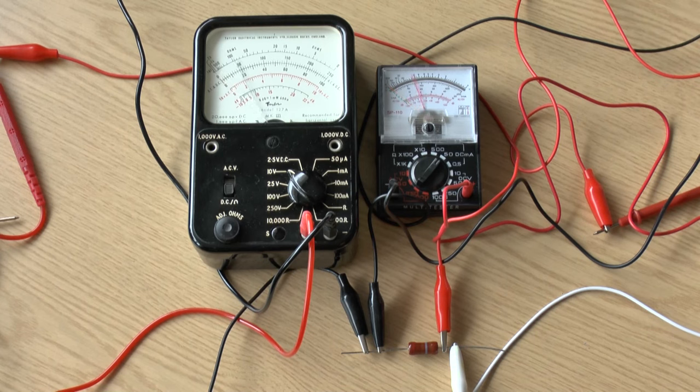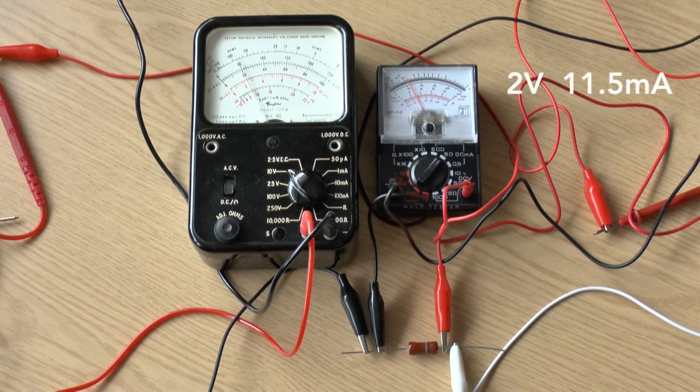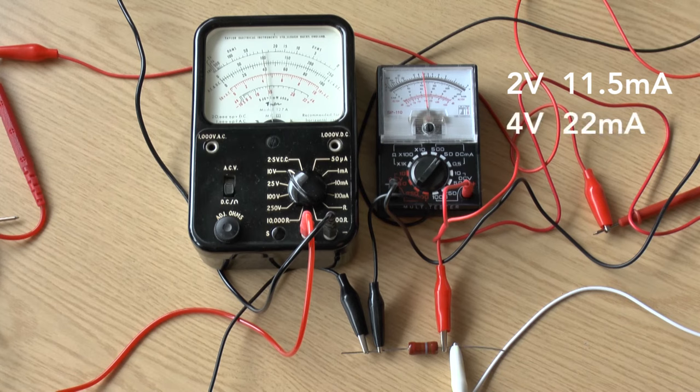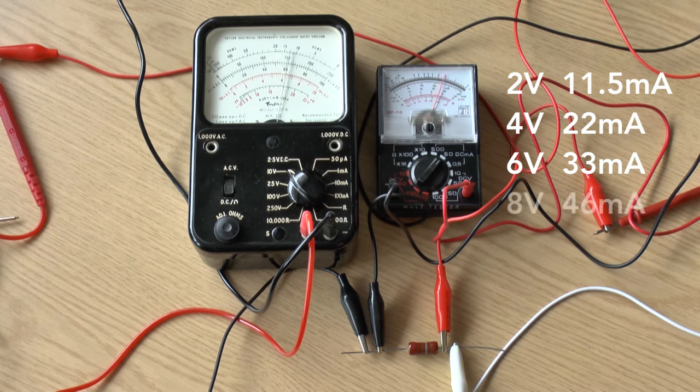We start by setting the potential difference to two volts, as measured by the larger multimeter, and then noting the current on the smaller one. Next, we increase the potential difference by two volts to four volts, and again note the current reading. We then make other readings at six volts, noting the reading, and then eight volts, again noting the reading.